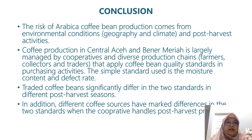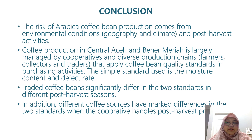In conclusion, the risk of Arabica coffee production comes from environmental conditions — both geography and climate — and post-harvest activities. Coffee production in Central Aceh and Bener Meriah is largely managed by cooperatives and diverse production chains of farmers, collectors, and traders that apply coffee bean quality standards in purchasing activities. The standards used are moisture content and defect rate. Traded coffee beans significantly differ in these two standards across different post-harvest seasons, and different coffee sources also show marked differences when the cooperative handles the post-harvest process. Thank you. Assalamualaikum warahmatullahi wabarakatuh.